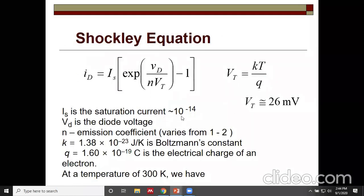Finally, we come to the Shockley equation — a very important expression that gives the current passing through the diode when the voltage across the diode is VD. IS is the saturation current of the order of 10 to the power minus 14. VD is the diode voltage. N is the emission coefficient, which varies from 1 to 2. K is Boltzmann's constant with a value of 1.38 × 10⁻²³. Q is the electron charge: 1.6 × 10⁻¹⁹ coulombs.